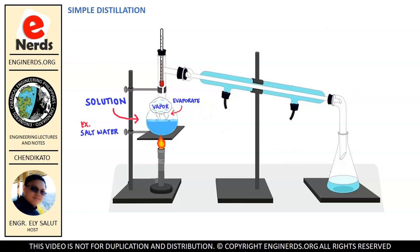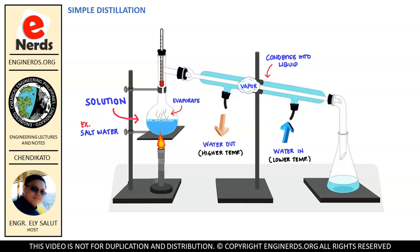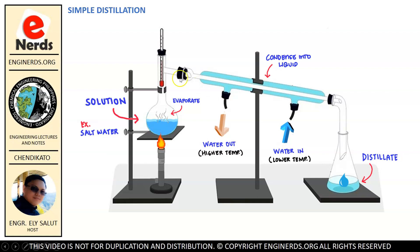The water vapor will pass through our condenser. In our condenser, water at lower temperature enters on one part and leaves at higher temperature because of a heat exchange happening between the vapor and the water supplied in the condenser. The temperature of our vapor will start to drop, causing the water vapor to condense and change into liquid form. Finally, this condensed liquid will flow down to our receiving flask, which will now contain our distillate — in this case, water separated from our salt solution.